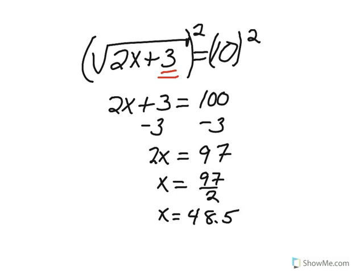Please pause the video and copy this into your notes. Don't forget to check your solution. By plugging 48.5 back into the problem, we do see that the square root of 2 times 48.5, add it to 3, does equal 10.